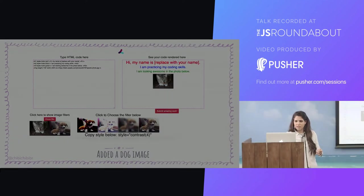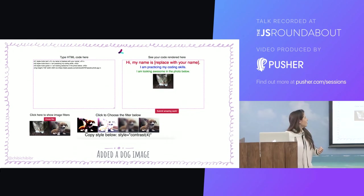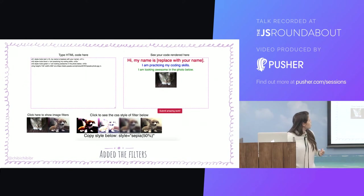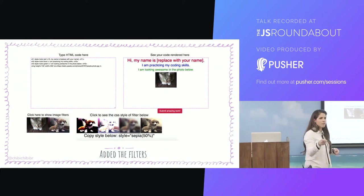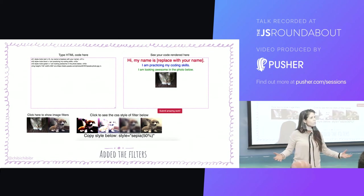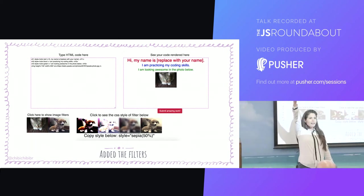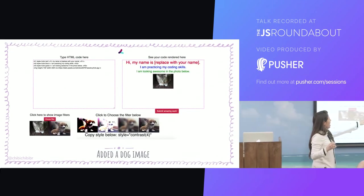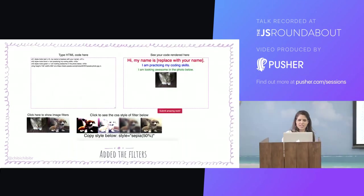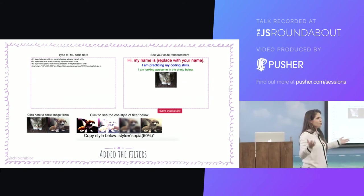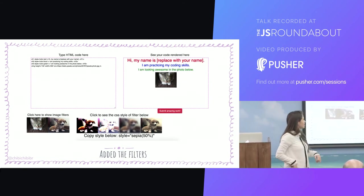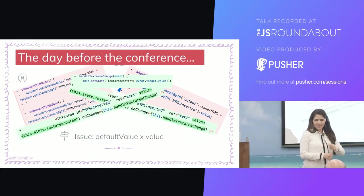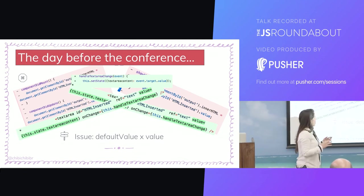Instead of using the webcam feature, I decided to just use static images — I got images of a cat, a dog, and a hamster. I'm a hamster person! I also added sepia and other filters from the previous work. It was looking cool — who needed those webcam filters anyway? This was just excellent.